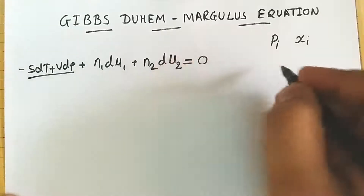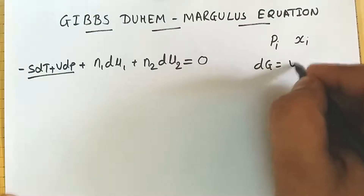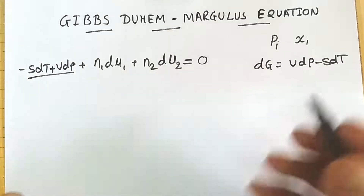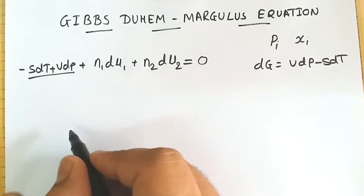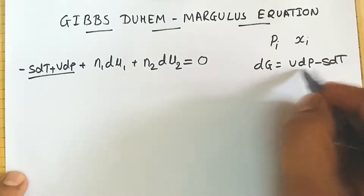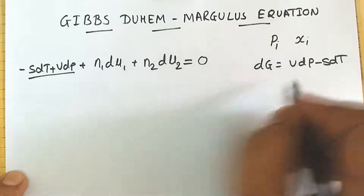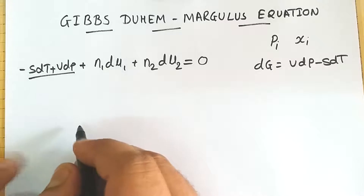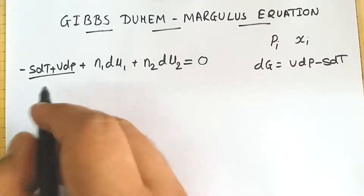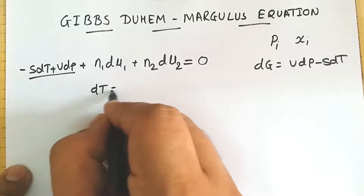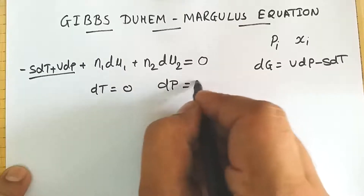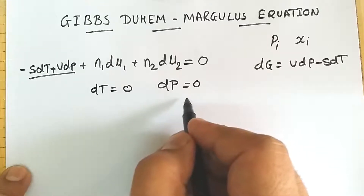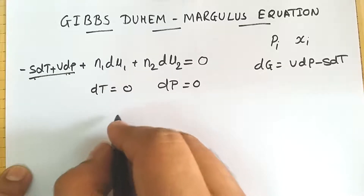We already know that dG equals vdP minus sdT. This gives the generalized form of the Gibbs-Duhem equation — I have already explained this in my curiosity lecture, and the link is given in the description. Now if we consider our system is at constant temperature and constant pressure, then dT equals 0 and dP equals 0, so both those terms are removed.